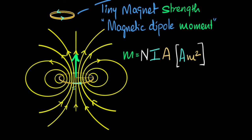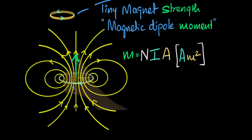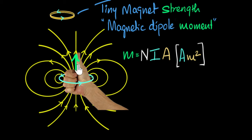If you think in terms of a magnet, the magnetic dipole moment points from south pole to north pole, because the field lines inside the magnet run from south to north. But if we just look at the current loop itself, we use the famous right-hand thumb rule: clasp your right hand so that the four fingers represent the direction of the current, and the thumb points in the direction of the magnetic moment.